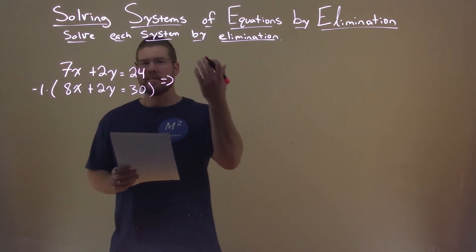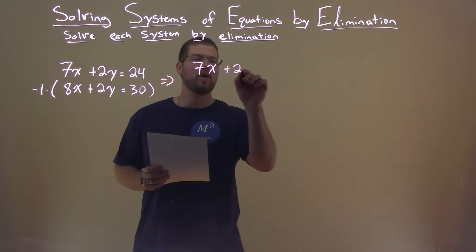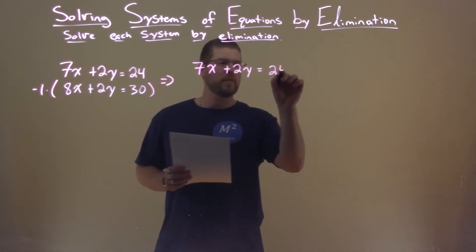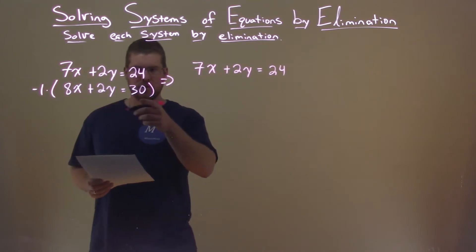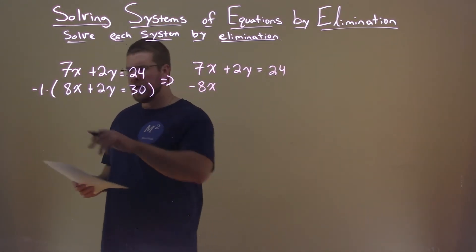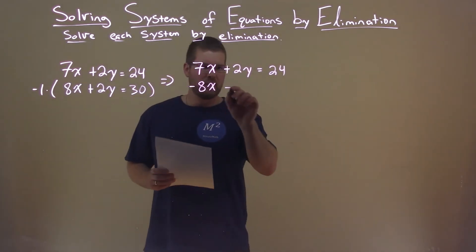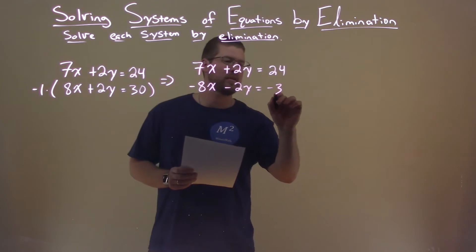Rewrite the top equation: 7x + 2y = 24. In the second equation, distribute the negative 1 to all parts. Negative 1 times 8x is -8x. Negative 1 times 2y is -2y. Negative 1 times 30 is -30.